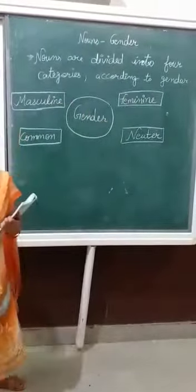Number one is masculine. It refers to a male person. Second is feminine. It refers to a female.